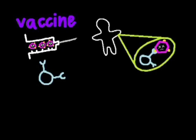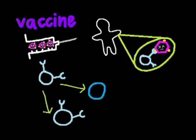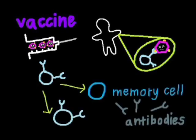In response, the body creates a special kind of B cell called a memory cell. Memory cells remember which antibodies work against a specific threat.